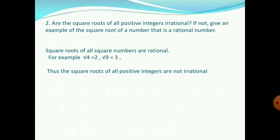Second question: are the square roots of all positive integers irrational? If not, give an example of the square root of a number that is a rational number. Square roots of all square numbers are rational. For example, root 4 is equal to 2, root 9 is equal to 3. Therefore, the square roots of all positive integers are not all irrational — but the square roots of all perfect square numbers are rational.